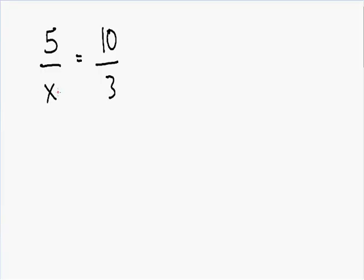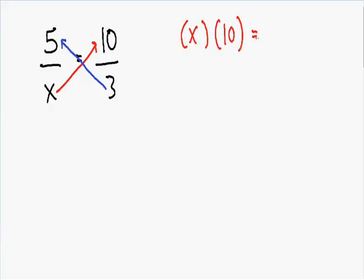When we cross multiply, we take the denominator x, cross over and multiply it by 10. Then we take the other denominator, 3, cross over and multiply it by 5. So in red we have x times 10, and in blue we have 3 times 5. That gives us 10x in red and 15 in blue.